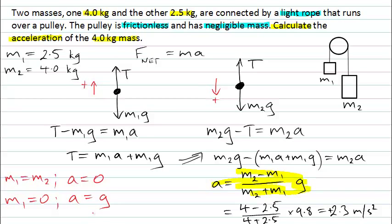If m1 was zero, m1 didn't exist. m2 would just have gravity pulling it downwards, there'd be no tension in the rope pulling upwards, there'd be nothing attached to the other end of the rope. And mass 2 would just accelerate downwards in freefall with an acceleration equal to g.